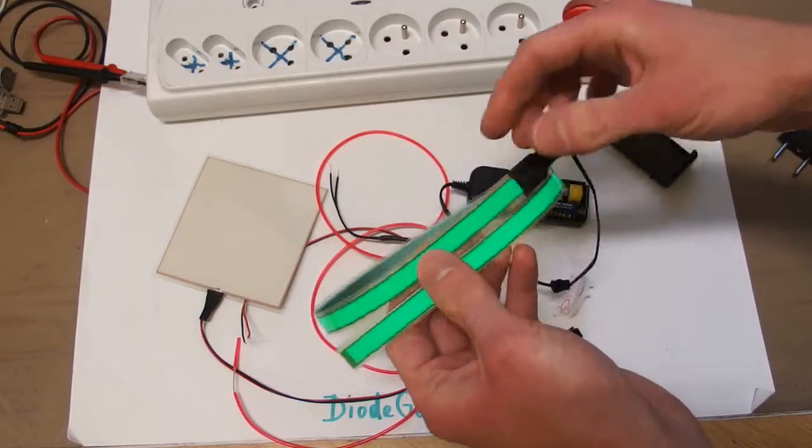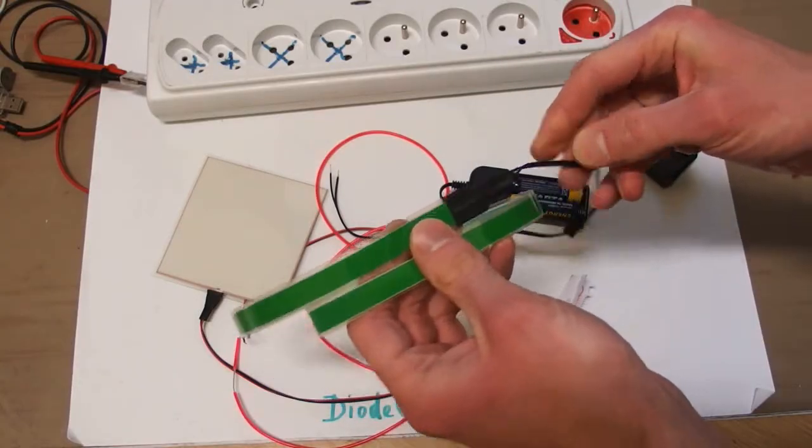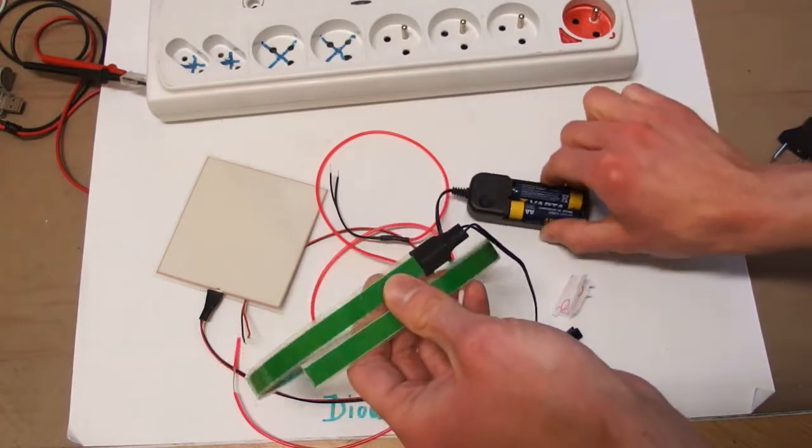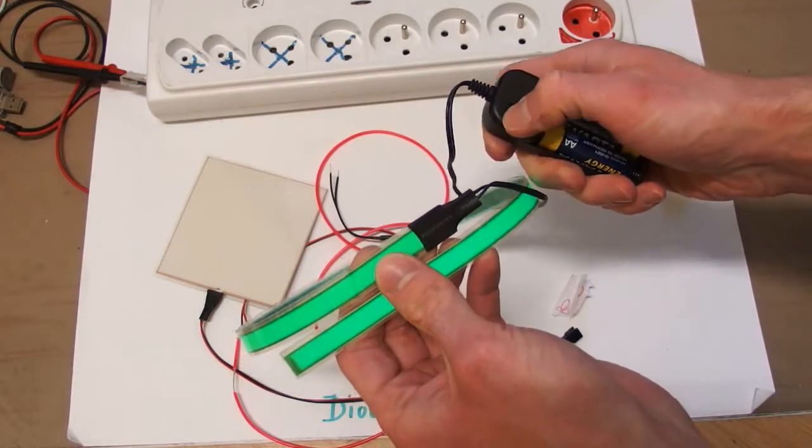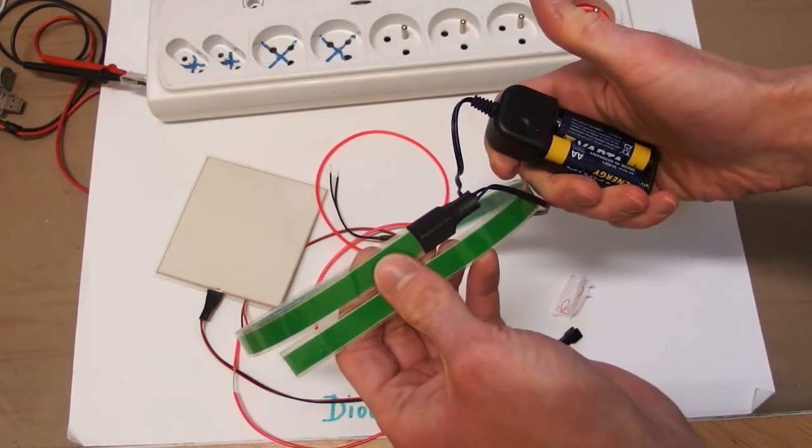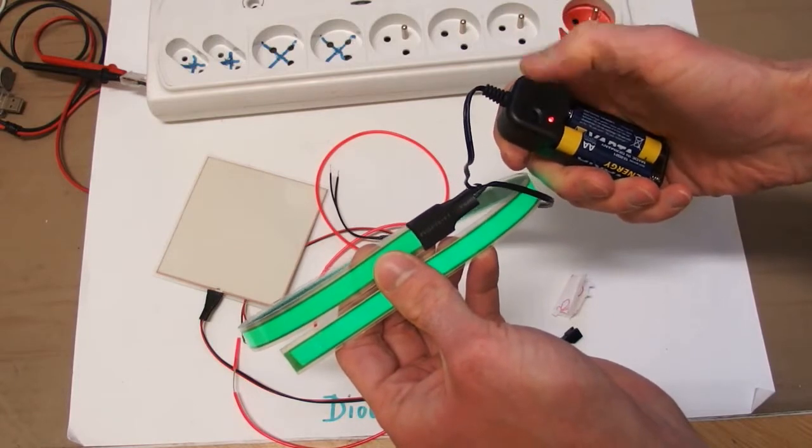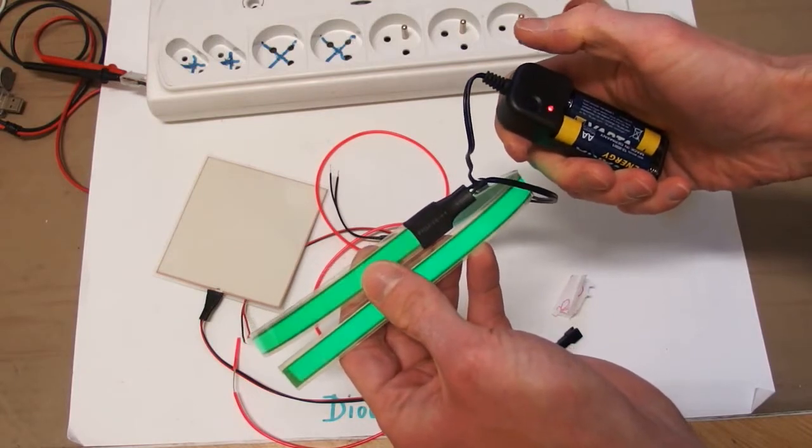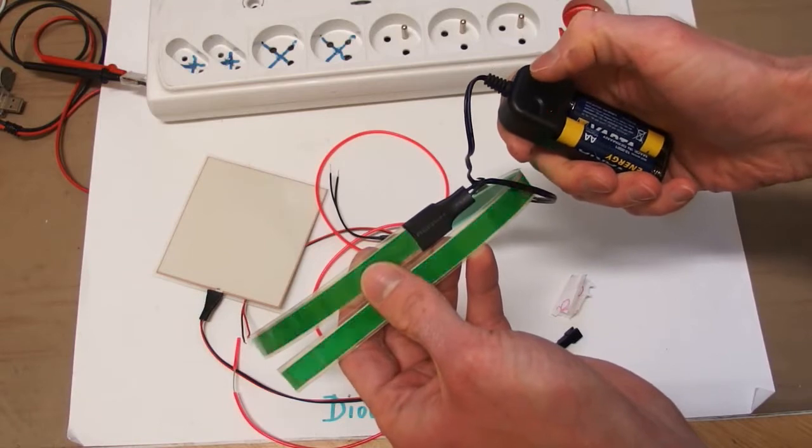So this is the green strip. There are two wires going to it and there's the driver. It has a button, you can turn it off, on, slow blinking and quick blinking.